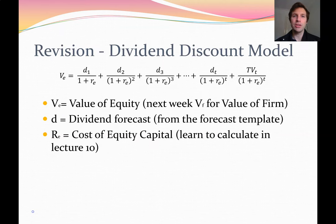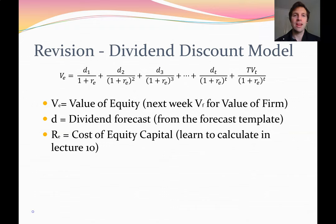In the prior lecture we learned about the dividend discount model. The formula states that the value of a firm's equity, VE, is equal to the dividends for each year divided by the discount factor, plus a terminal value divided by the discount factor at the end. You add up all those discounted dividends to get the total value of a firm's equity, then divide by the number of shares to get a price per share estimate.